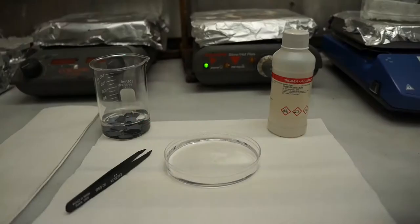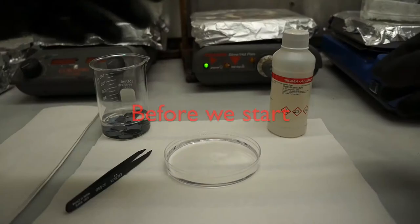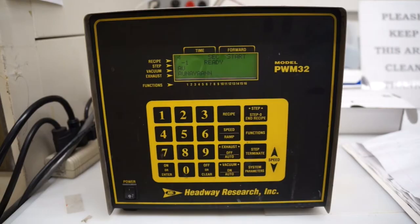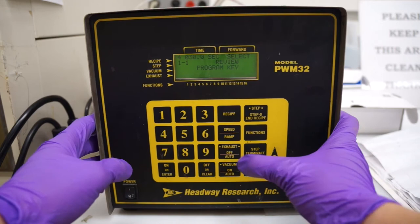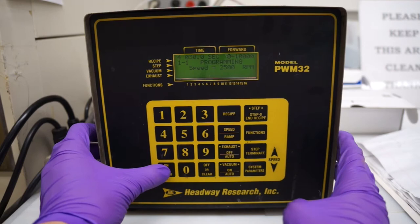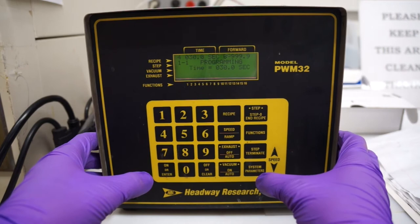The spin caster controller allows you to program the speed and duration of a spin, so let's go over how to program the settings that we need. First press step and one. Then speed ramp and plug in the speed, which is 2500 RPM and press enter. Then, press step terminate and enter the amount of time, which is 30 seconds, and press enter. Finally, press step and zero to return to the ready state.